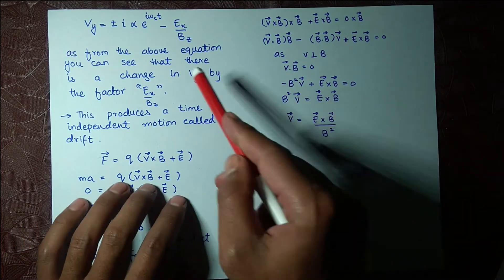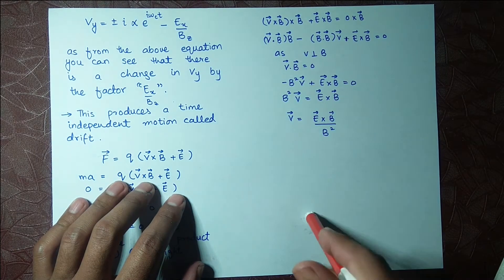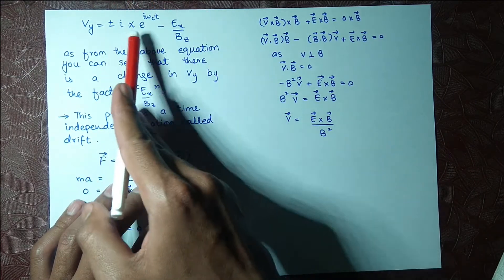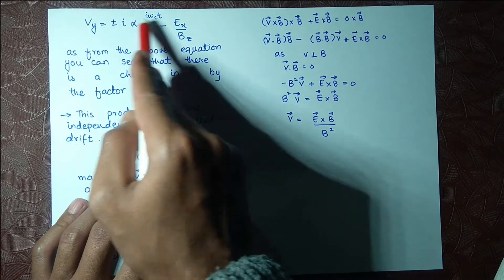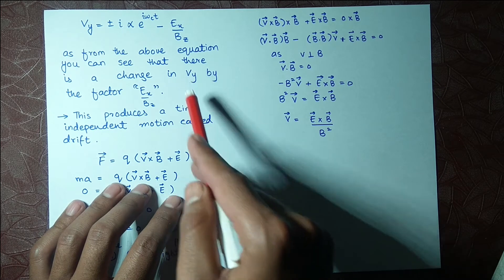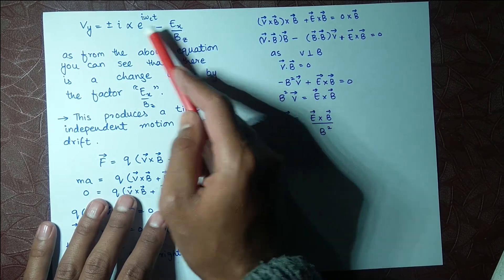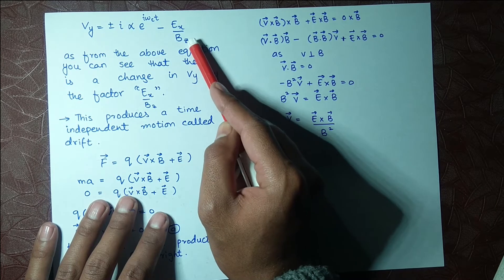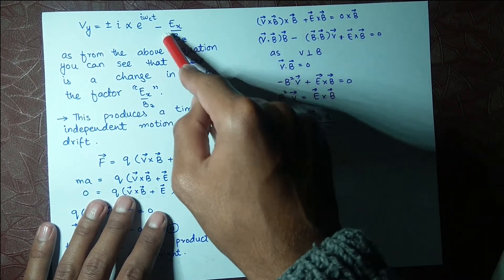Moving on toward our derivation — we have derived this equation in the previous lectures; this was equation number six. From the above equation you can see that when E was equal to zero and when E was not equal to zero, there was a difference between these equations. There is a change in v_y, and E_x and B_z are fully independent of time — they are space-dependent factors, not depending on time.